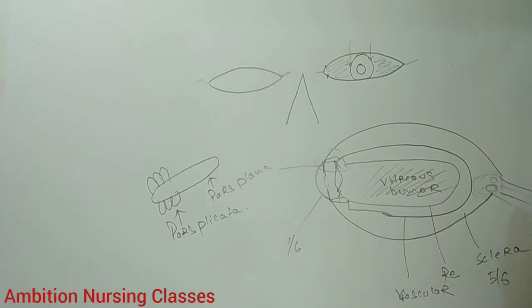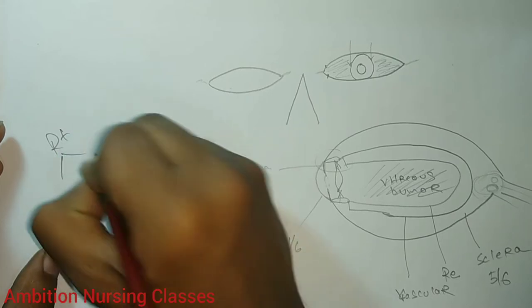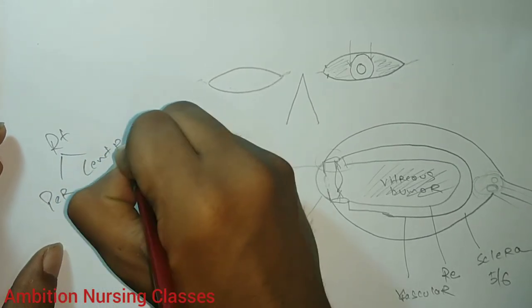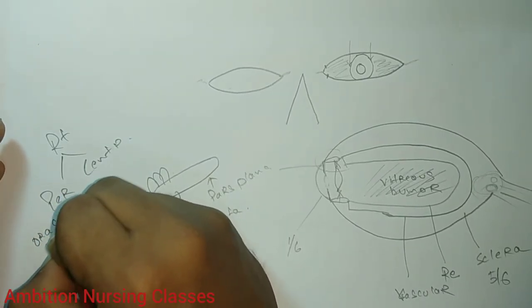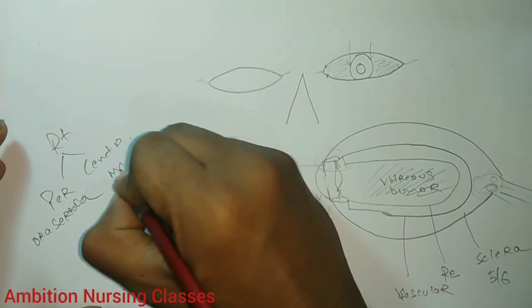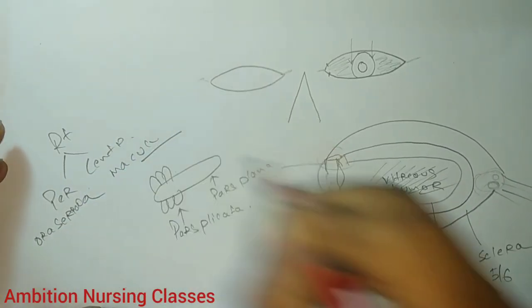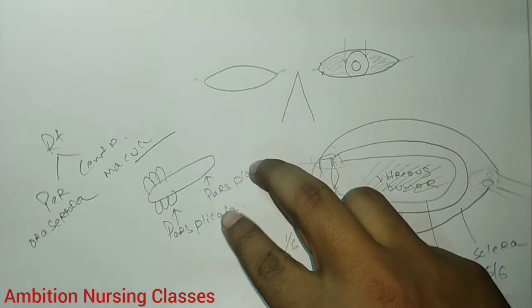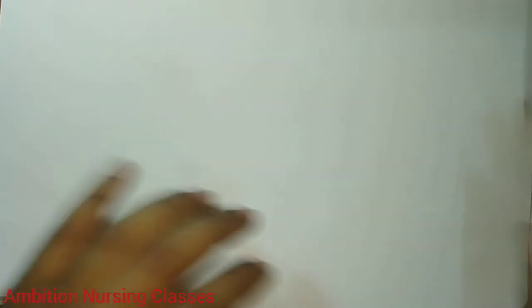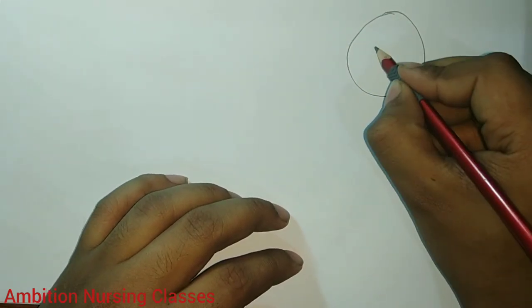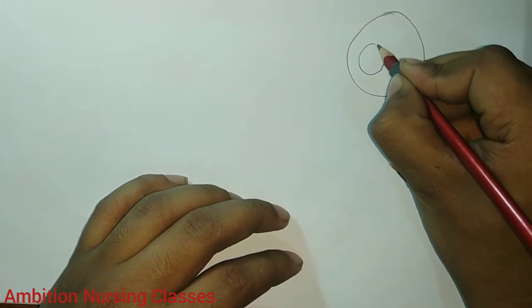Now we are going to talk about the retina. As I told you, the retina is divided into two parts: peripheral and central. The peripheral is known as ora serrata and the central is the macula. Whenever you use an ophthalmoscope, this is the kind of structure you are able to see.